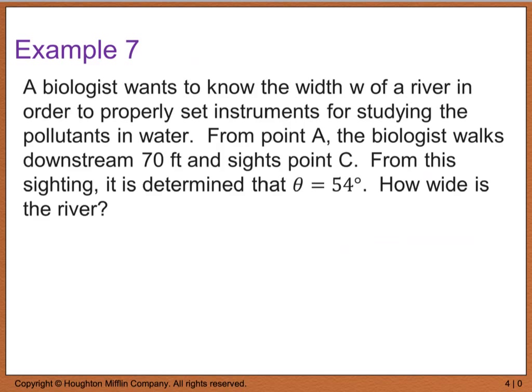Example 7 says that a biologist wants to know the width w of a river in order to properly set instruments for studying the pollutants in water. From point A, the biologist walks downstream 70 feet and sights in point C. From this sighting, it is determined that theta equals 54 degrees. What we want to know is how wide is the river. So if we draw a sketch, this is kind of what we've got going on here.